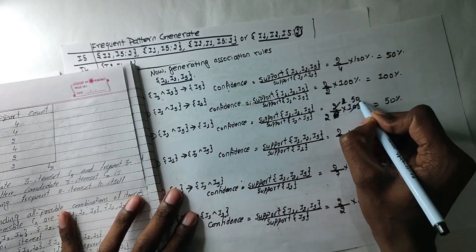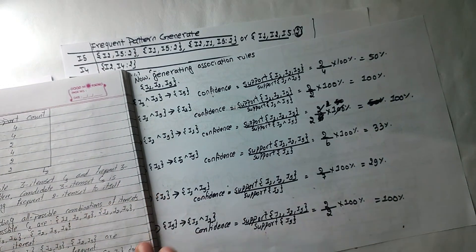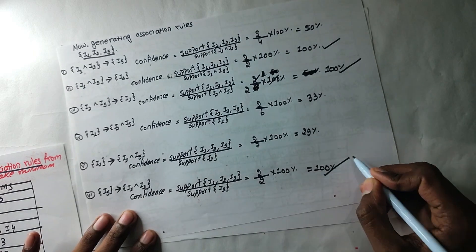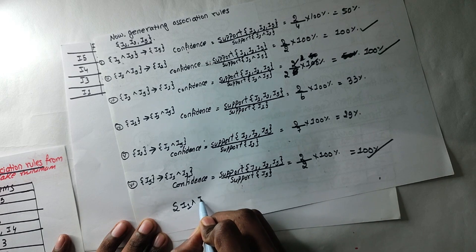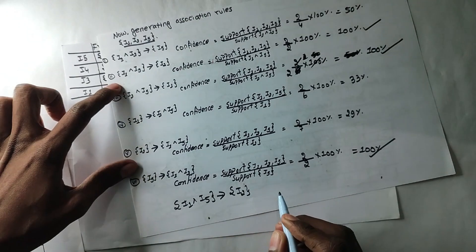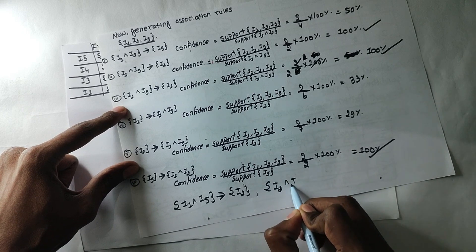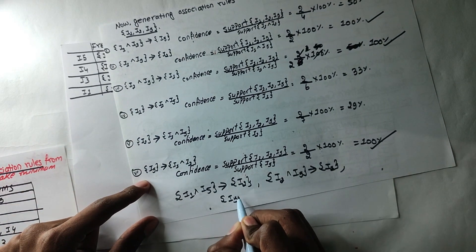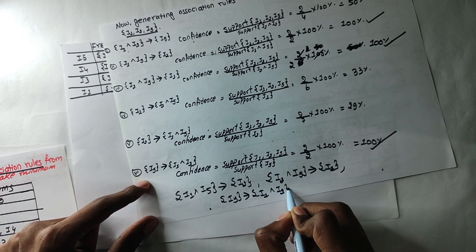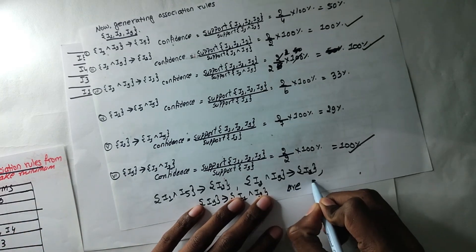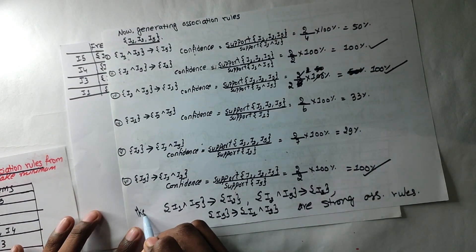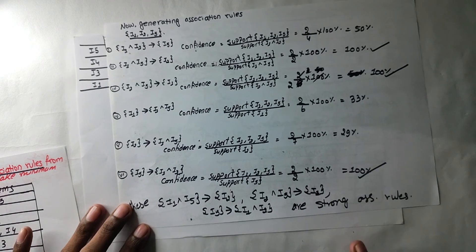Sorry — so all 2, 100%. Then you can see — 1 intersection 5, 2, 1. i2, i5, i1, i1, i2. You can see the strong association rule. So here we complete the 4th part.